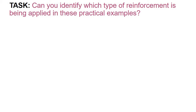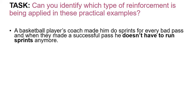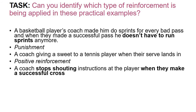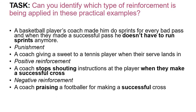Hopefully you came up with something similar: the basketball player doing sprints for every bad pass - that is a form of punishment. A coach giving a sweet to a tennis player when their serve lands in - an example of positive reinforcement. A coach stops shouting instructions at the player when they make a successful cross - an example of negative reinforcement. And a coach praising a footballer for making a successful cross - positive reinforcement.